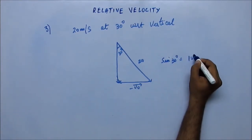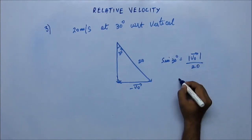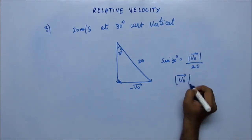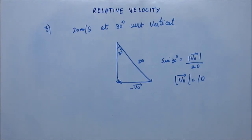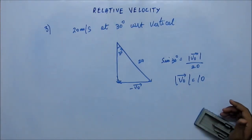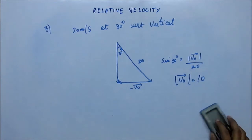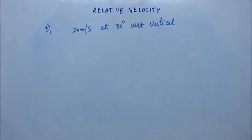So mod of V₀ comes out as 10. The velocity of the man should be 10 meters per second for the rain to appear to him to be falling vertically downward. Now in the same question, suppose the rain appears to him to be falling at 30 degrees with respect to vertical — then at what speed should he be moving?